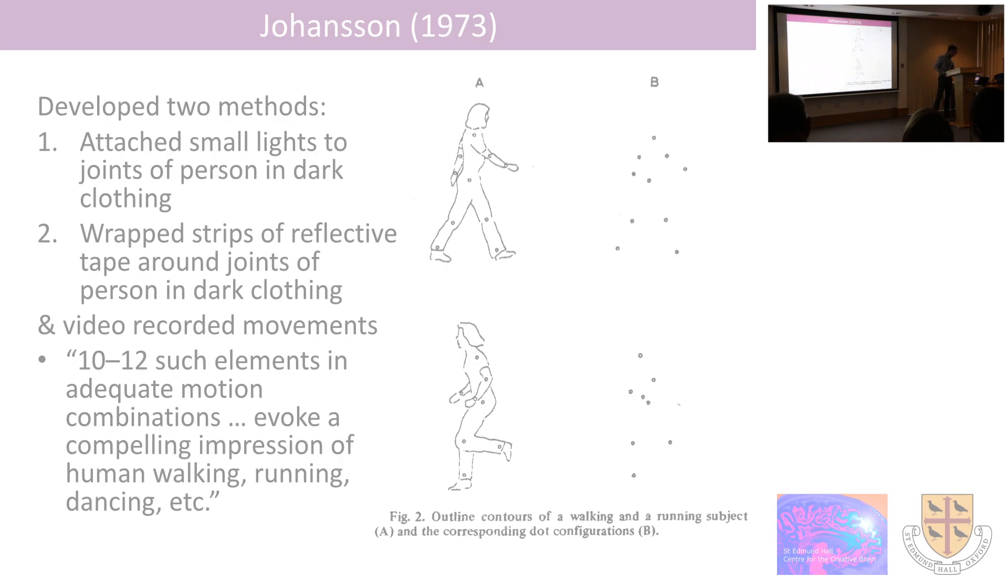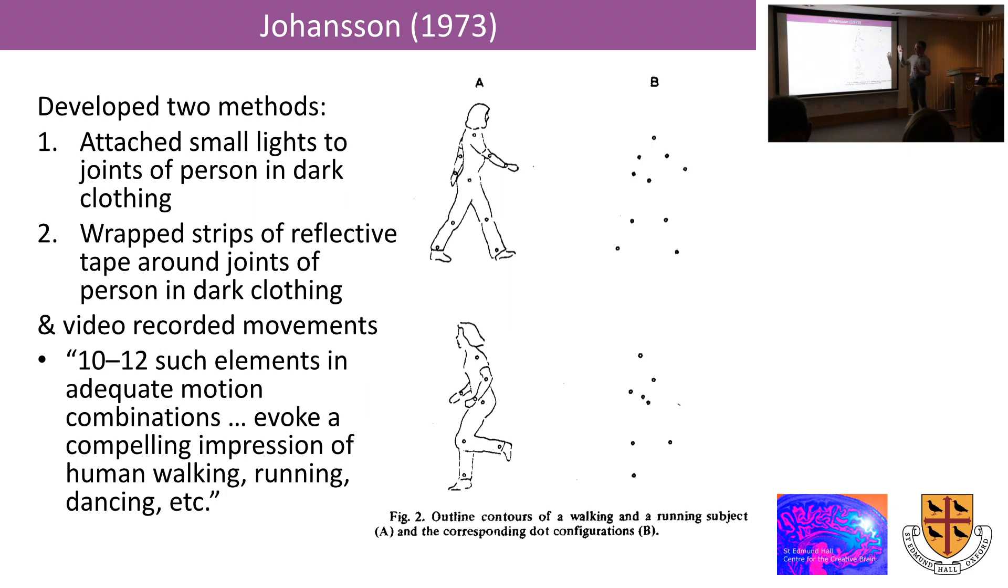And this work originates primarily from the work of a Swedish psychologist Johansson back in the 1970s. What he did was attach points of light or markers, reflective tape for example, to the joints of people in the format that you see in the figures on the right. One method was to attach small lights to the joints of the person dressed in dark clothing, and another one was to wrap strips of reflective tape around the joints of the person in dark clothing, and then video record the movements in either of these cases, and to do some video editing afterwards, such that all you are left with are these white dots, typically white dots, moving against a dark background.